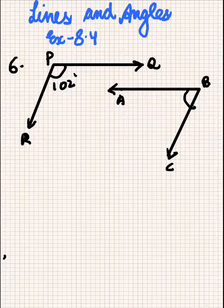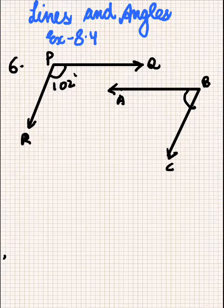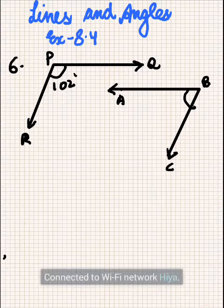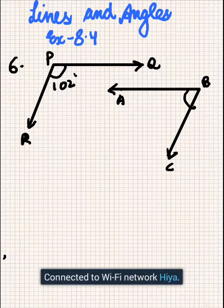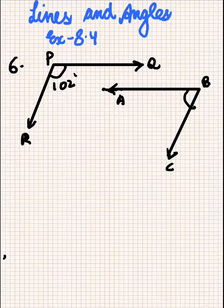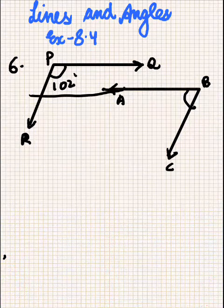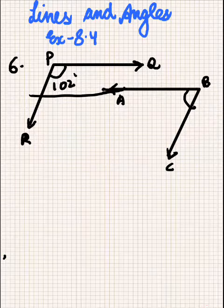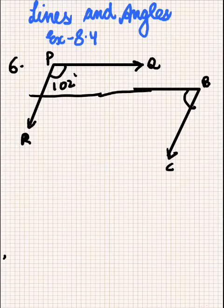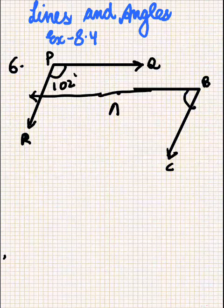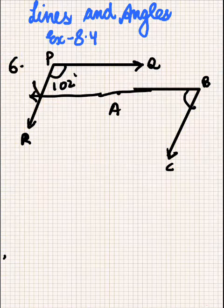If we observe this, we can't find angle ABC directly because these lines are not joined. So first of all we'll join them, and I'll name this new point S.